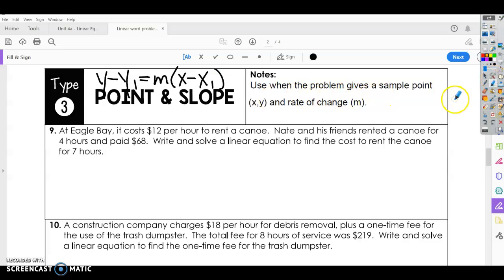Use when the problem gives a sample point and a rate of change. So in each of these problems, we're going to be given a point and a rate of change. So the first thing we need to do is determine what is our point and what is our slope. Let's look at the first problem, number nine.